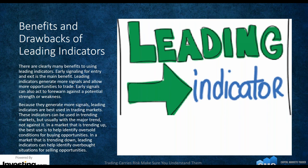The benefits and drawbacks of leading indicators: there are clearly many benefits. Early signaling for entry and exit is the main benefit. Leading indicators generate more signals and allow more opportunities to trade. Early signals can act as a forewarning against potential strength or weakness. Because they generate more signals, leading indicators are best used in trading markets. These indicators can be used in trending markets but usually with the major trend, not against it. In a market trending up, the best use is to help identify oversold conditions.